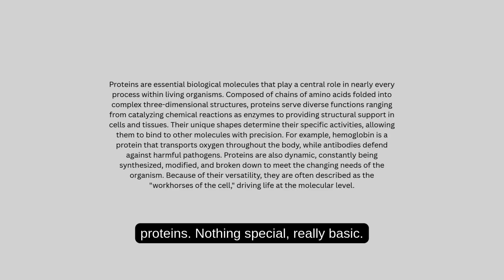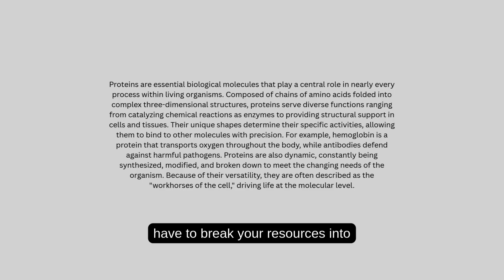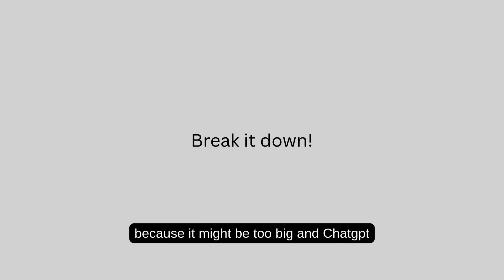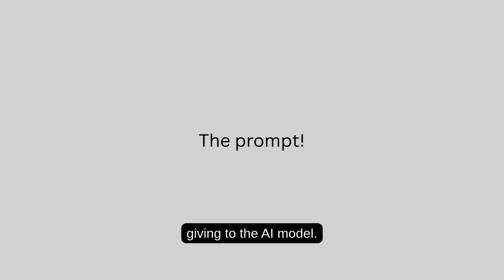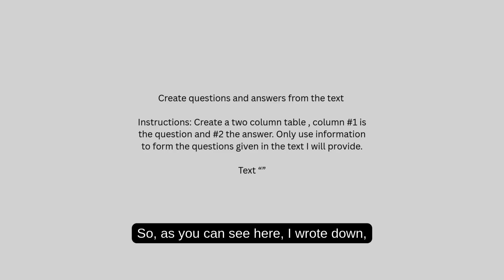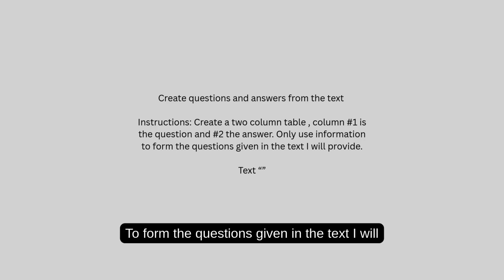The next thing you need to do is pick a topic. My topic is a small paragraph on proteins — nothing special, really basic. Keep in mind that sometimes you might have to break your resources into two or three parts because it might be too big and ChatGPT might not be able to process it. The prompt is the instructions you are giving to the AI model — it needs to be clear and detailed. I wrote: create questions and answers from the text. Create a two-column table — column one is questions, column two is answers. Only use information from the text I will provide.